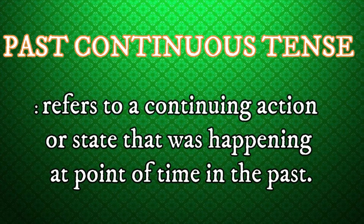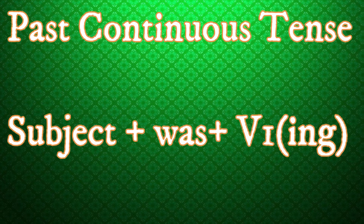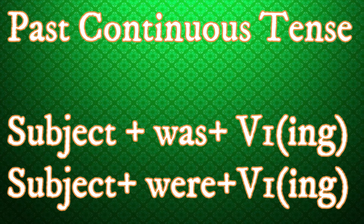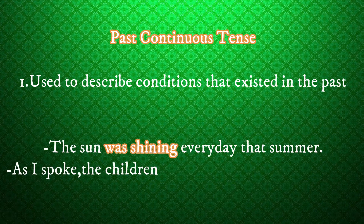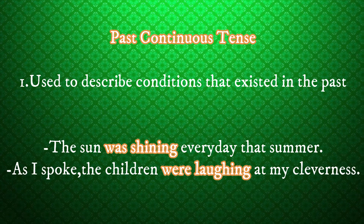Now, the use of past continuous tense. Past continuous tense is also known as the past progressive tense. It refers to a continuing action or state that was happening at some point in the past. It is formed by combining was or were with the first form of the verb with -ing. There are many situations in which this verb tense might be used in a sentence.